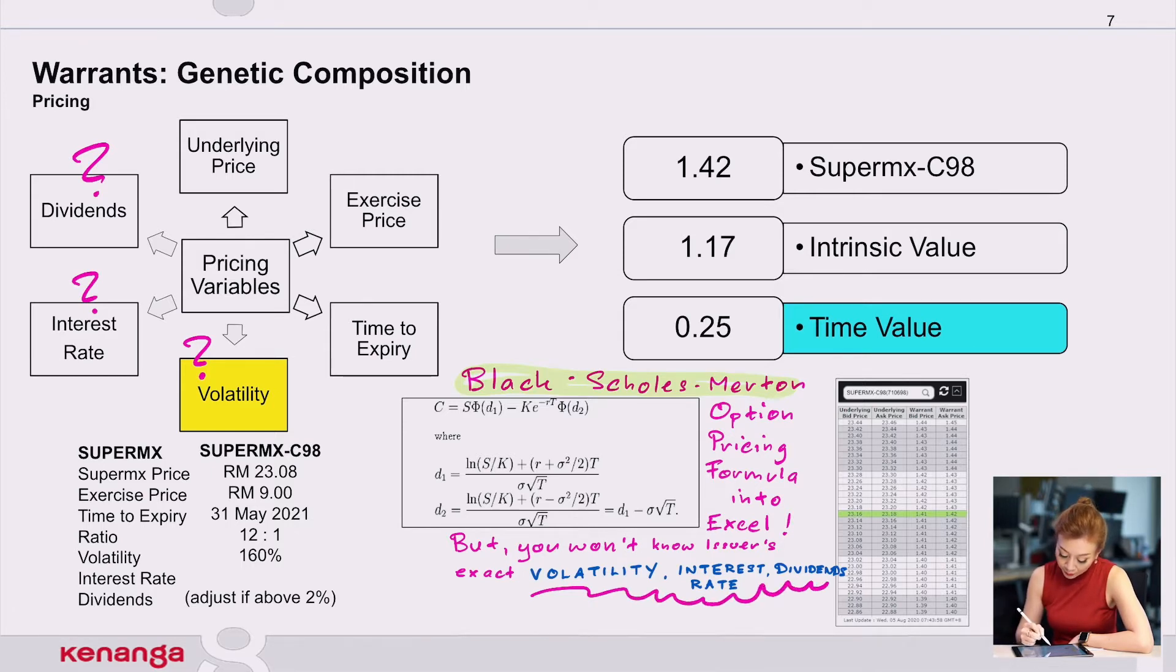So once the issuer actually puts into the formula, there will be the output, which is the actual Supermax C98. It will be trading at 142, for example. How do you actually calculate the fair value or intrinsic value of a warrant?